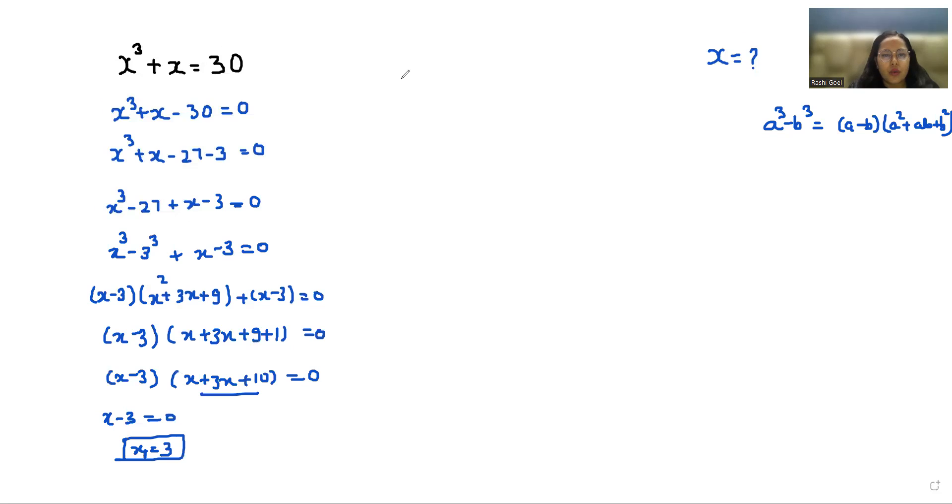Now I am going to use the quadratic formula: x = (-b ± √(b² - 4ac)) / 2a, where a is the coefficient of x², b is the coefficient of x, and c is the constant. Let's put all the values.